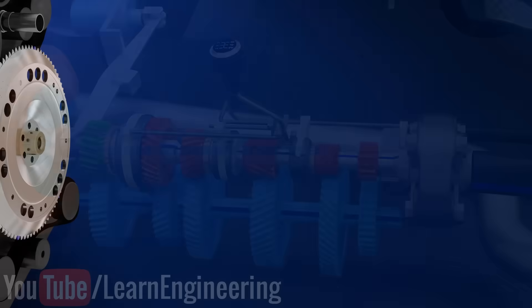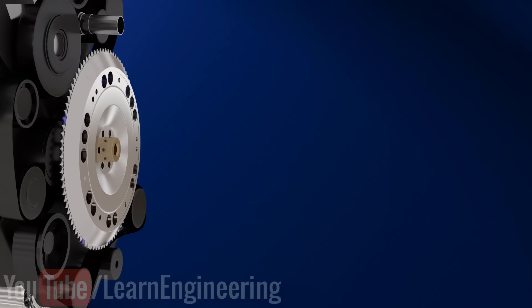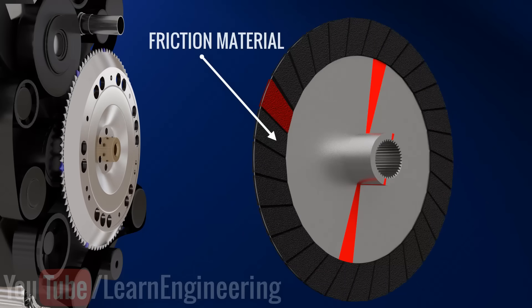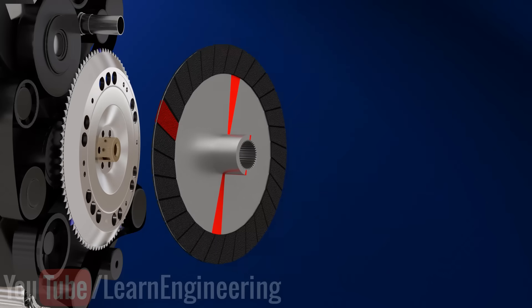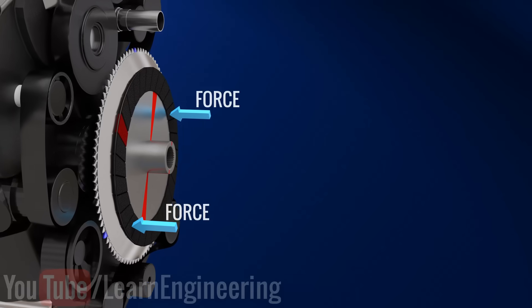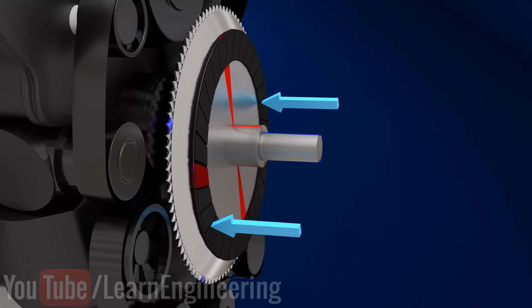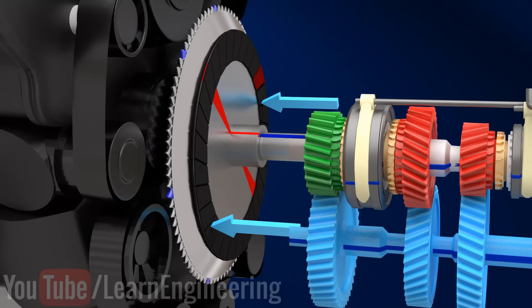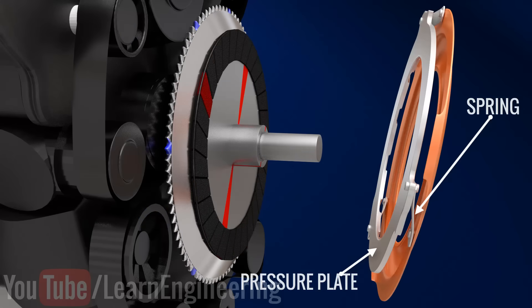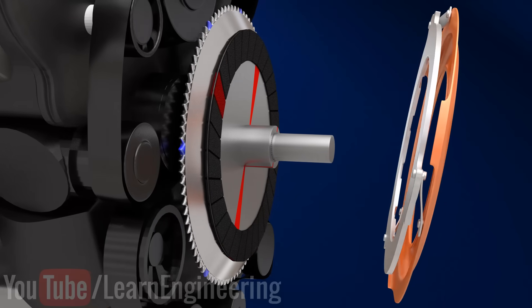In a clutch, motion from the flywheel is transferred to the transmission with the help of a friction disc. When a good external force is supplied to the disc, the motion from the flywheel will be transferred to the transmission due to adequate frictional force. A pressure plate spring mechanism provides this external force.